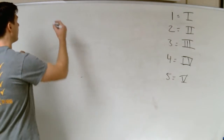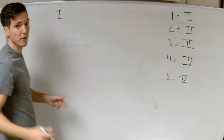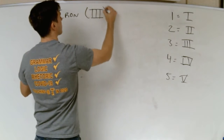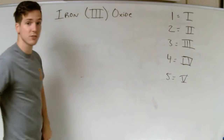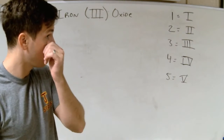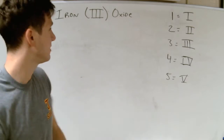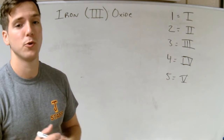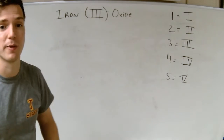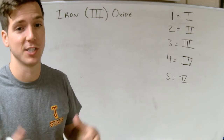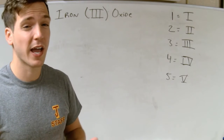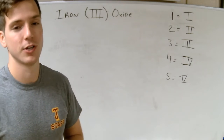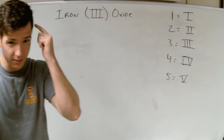Let's look at our first compound going from name to formula. Iron(III) oxide. This is how we name compounds that have transition metals. The Roman numeral in parentheses after the metal name is the charge on the transition metal. A lot of you think that 3 stands for how many iron atoms there are — that is not true. It is the charge on the transition metal. Remember that.